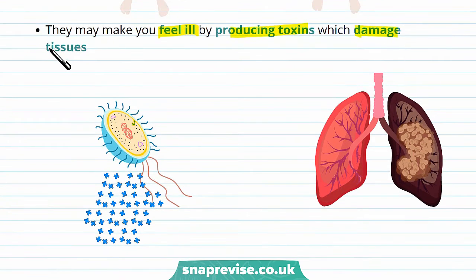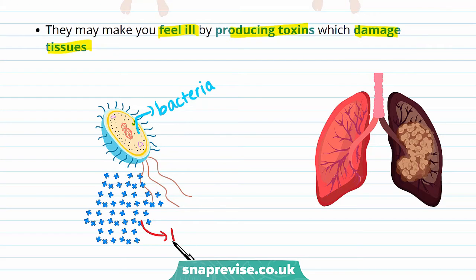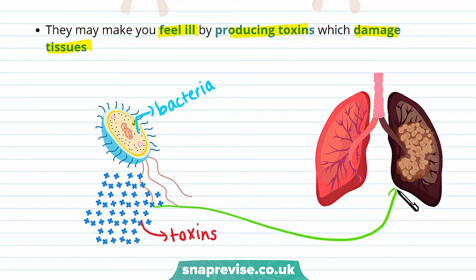Some bacteria are pathogens and they may make you feel ill by producing toxins, and these damage tissues. This bacteria produces the toxins shown here, and these toxins can damage tissues. For example, the bacteria that causes tuberculosis produces toxins that damage the tissues in the lungs.